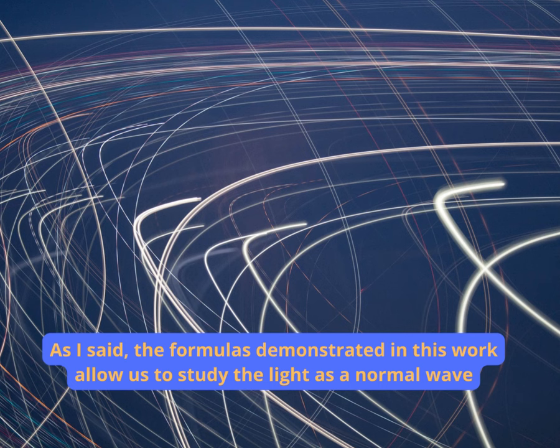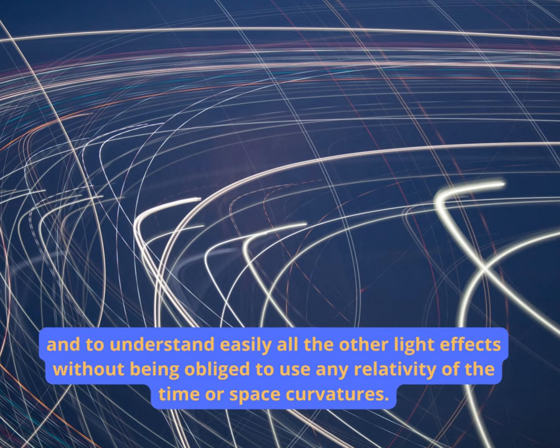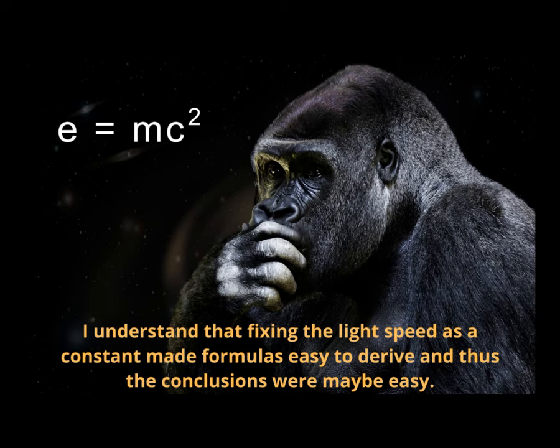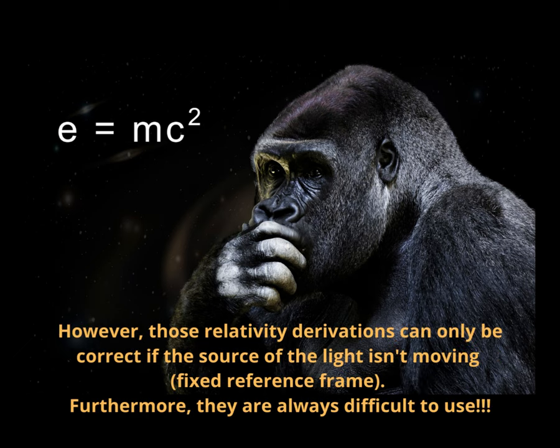As I said, the formulas demonstrated in this work allow us to study the light as a normal wave, and to understand easily all the other light effects without being obliged to use any relativity of the time or space curvatures. I understand that fixing the light speed as a constant made formulas easy to derive and thus the conclusions were maybe easy. However, those relativity derivations can only be correct if the source of the light isn't moving.